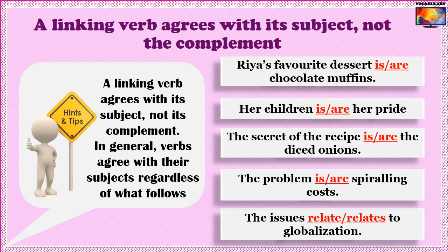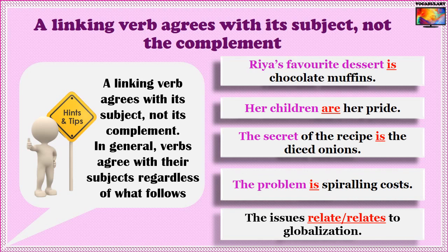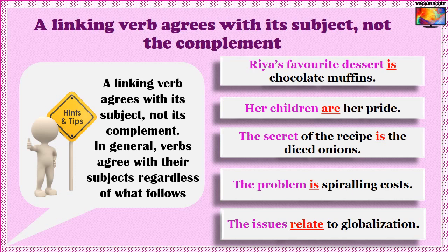Answers for the linking verb exercise: 'Riya's favorite dessert is chocolate muffins' — 'dessert' is singular, so 'is.' 'Her children are her pride' — 'children' is plural, so 'are.' 'The secret of the recipe is the diced onions' — ignore the prepositional phrase, 'secret' is the singular subject. 'The problem is spiralling costs.' 'The issues relate to globalization' — 'issues' is the plural true subject, so 'relate.'